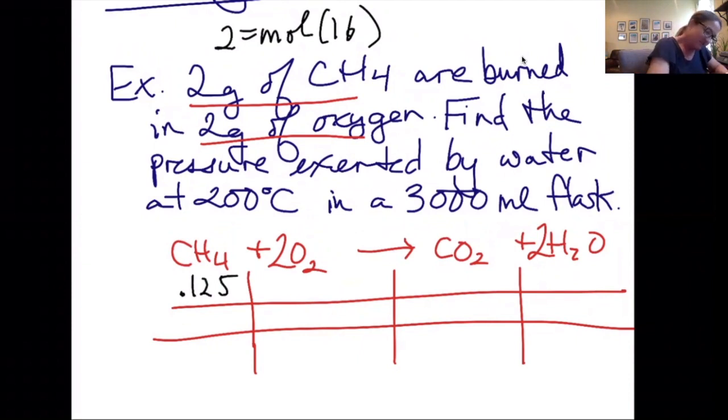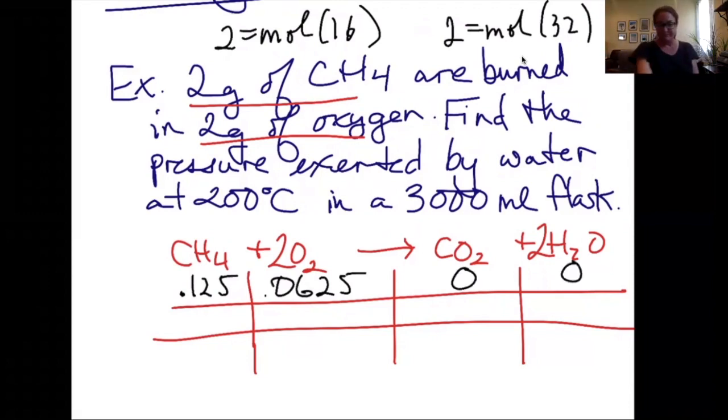For the oxygen, 2 equals moles times 32. 2 divided by 32 gives me 0.0625 moles of oxygen. Both of these are starting at 0. That's my initial row.